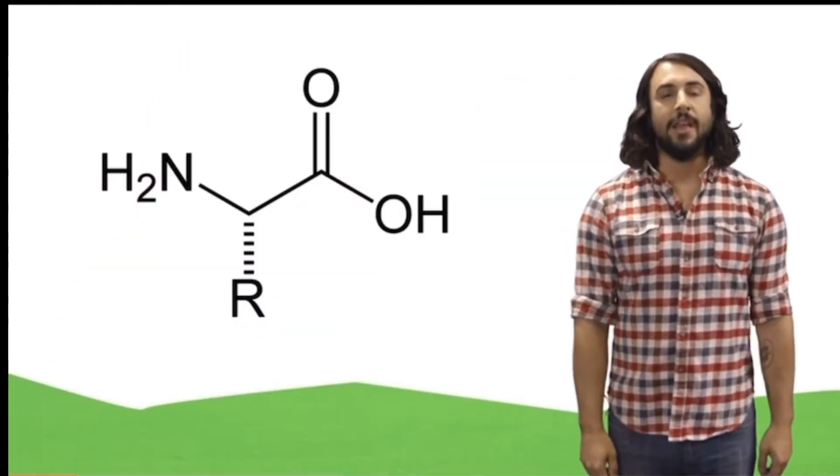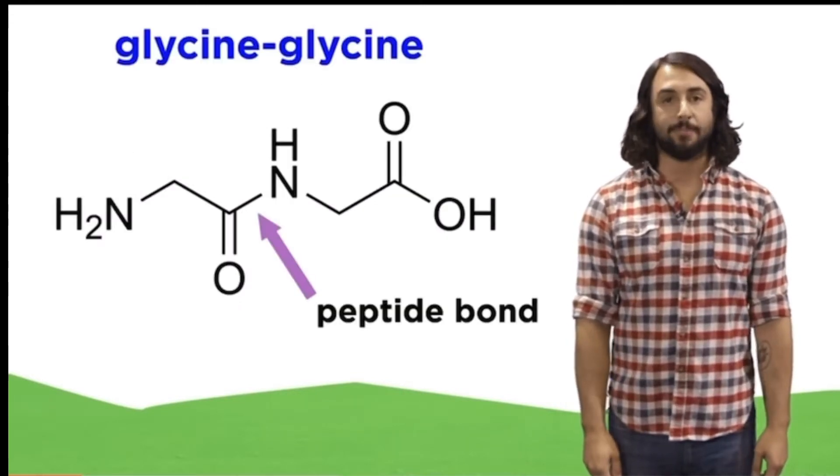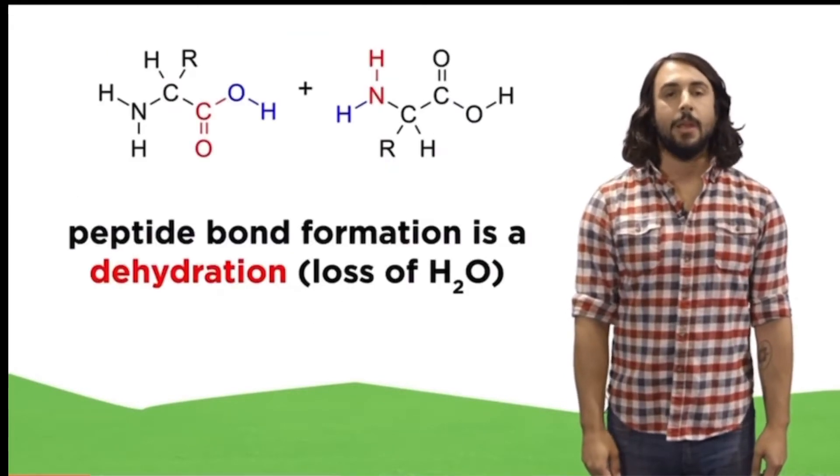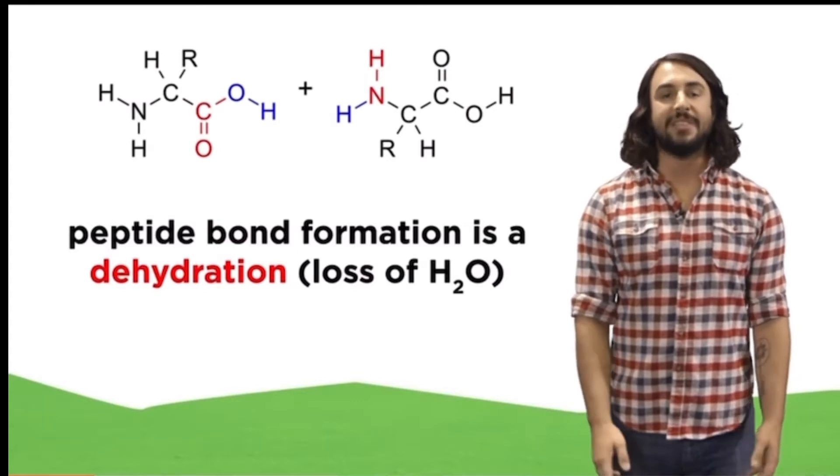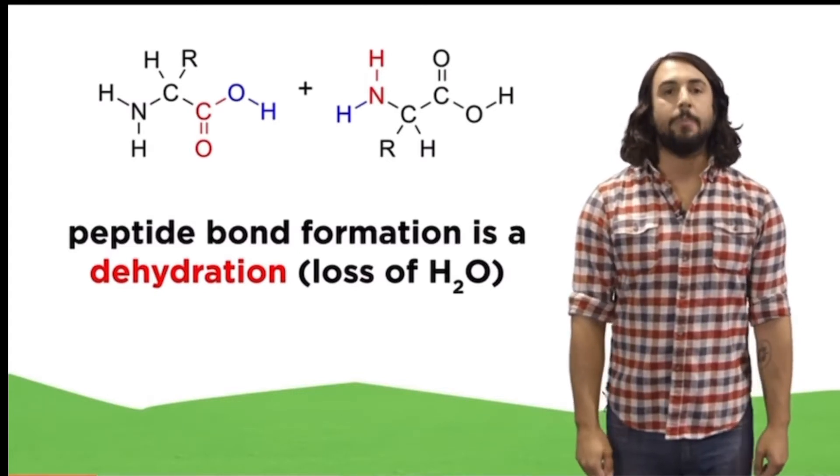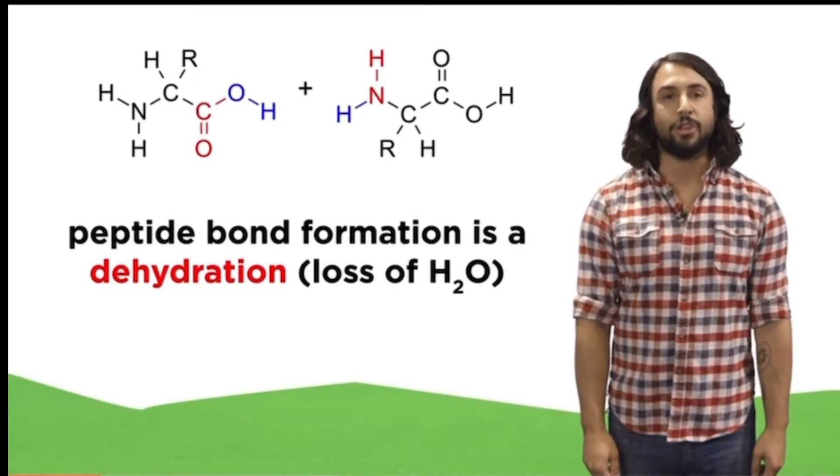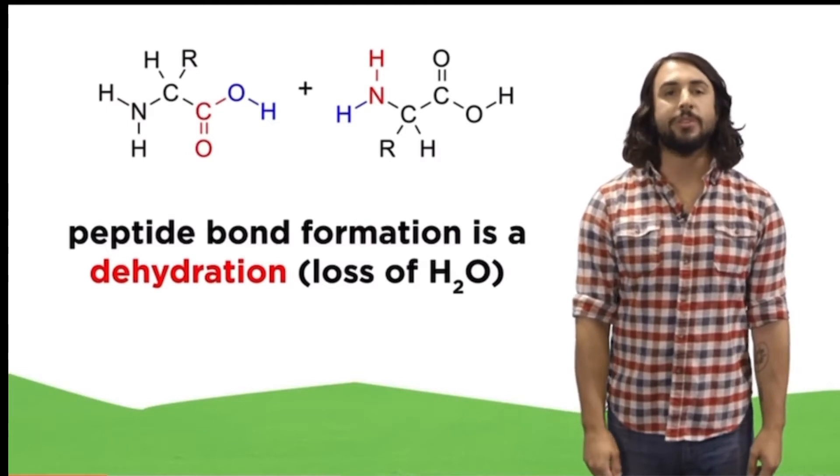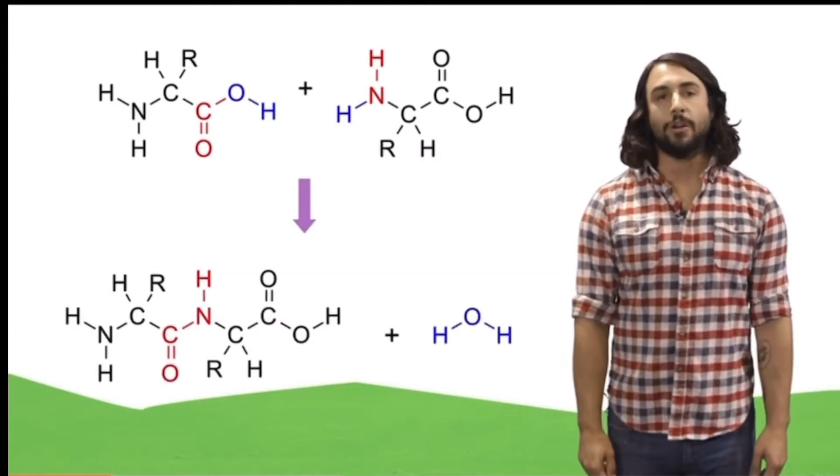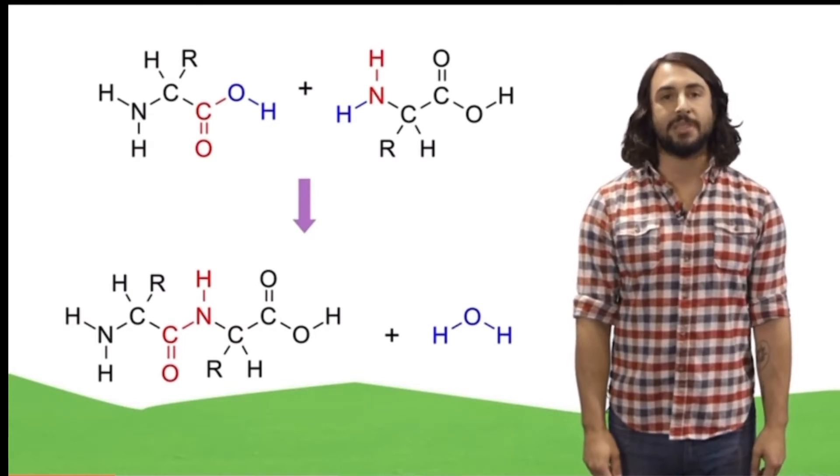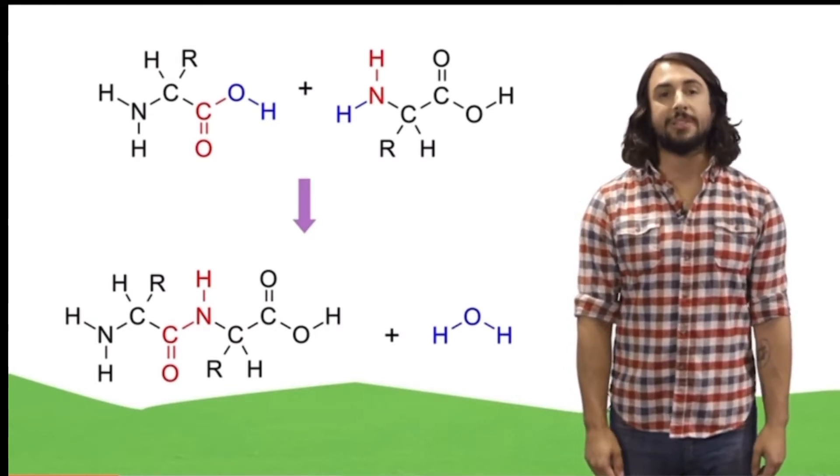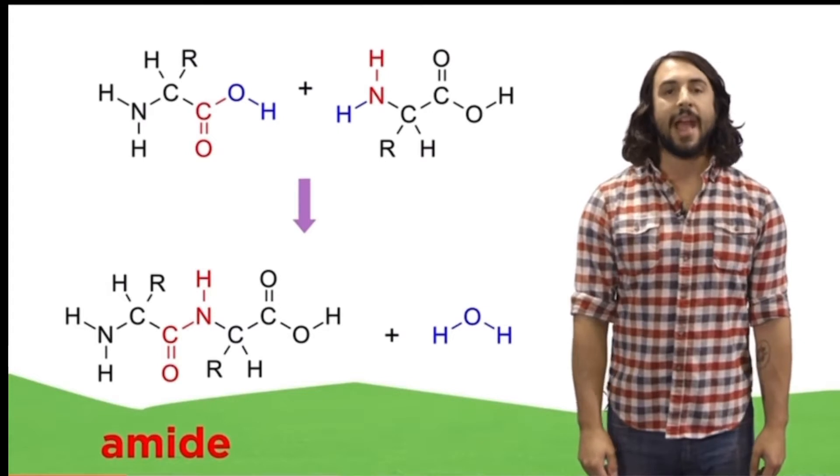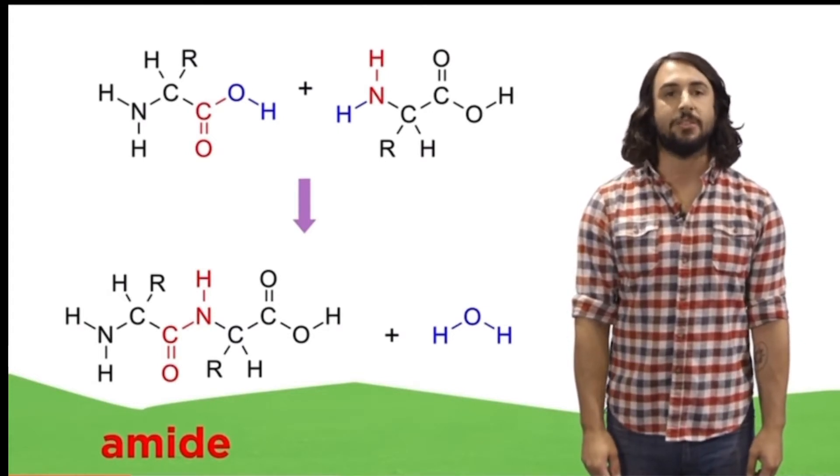So how do amino acids polymerize? This happens when amino acids form peptide bonds with one another, such as the peptide bond between these two glycine units. Peptide bond formation is an example of a dehydration reaction, because the two hydrogens and the oxygen marked in blue are lost. Two hydrogens plus one oxygen equals a water molecule. As a water molecule is lost, these two amino acids come together to form a peptide bond, which results in an amide. An amide is a functional group with a nitrogen atom next to a carbonyl, and this is the functional group that will connect each amino acid during polymerization.